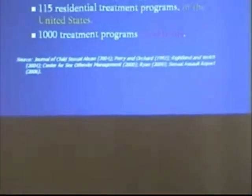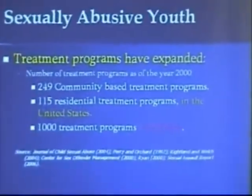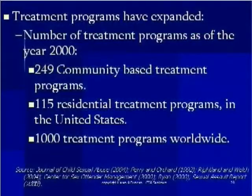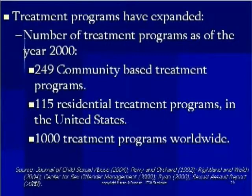Assessment and treatment programs have expanded tremendously over the last few years when it comes to adolescent sexual offenders. The number of treatment programs as of the year 2000 is 249 community-based treatment programs, and I'm sure that's doubled by now in 2006. There are also 115 residential treatment programs, and that's just in the U.S.